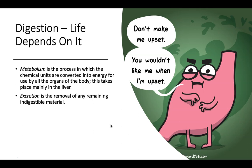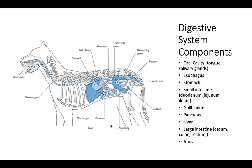Water is absorbed through the large intestine, so it's good to know where each process takes place. Metabolism is the process in which chemical units are converted into energy for use by all the organs of the body, taking place mainly in the liver. Excretion or elimination is the removal of any remaining indigestible material.